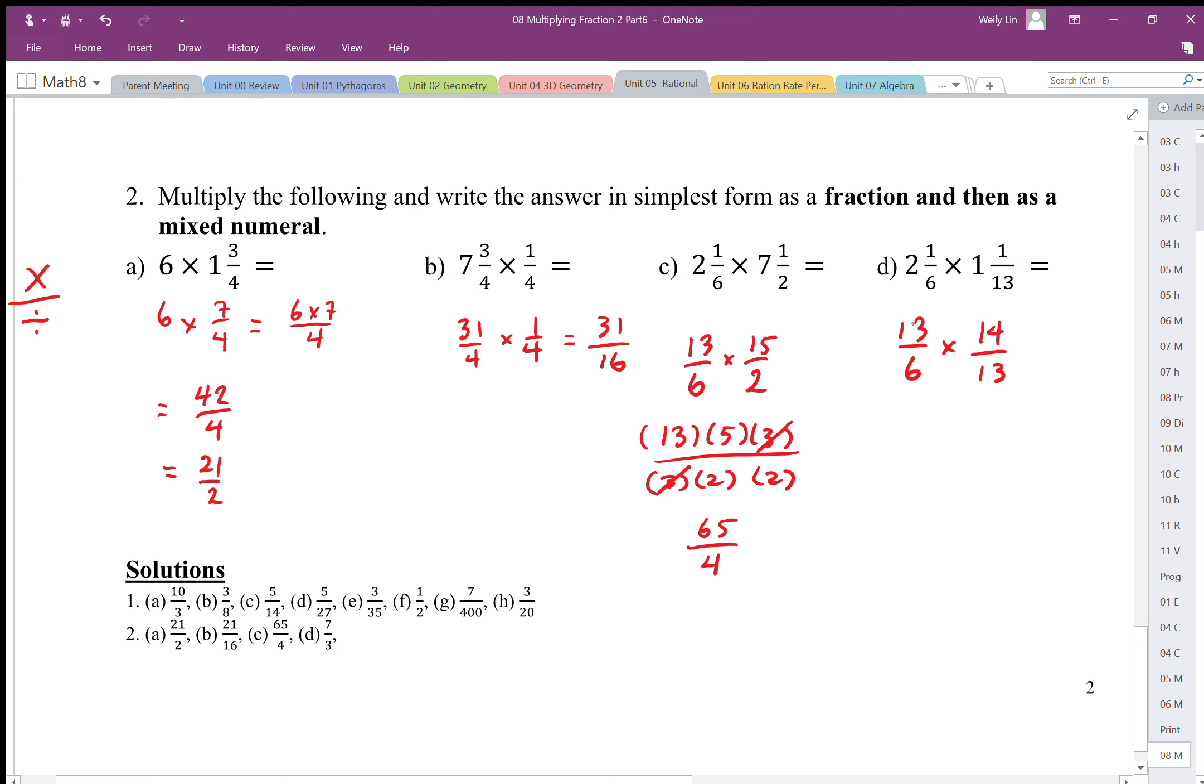Now 13 in the numerator is times, 13 in the denominator is divide. Those will undo each other so we end up with 14 over 6.